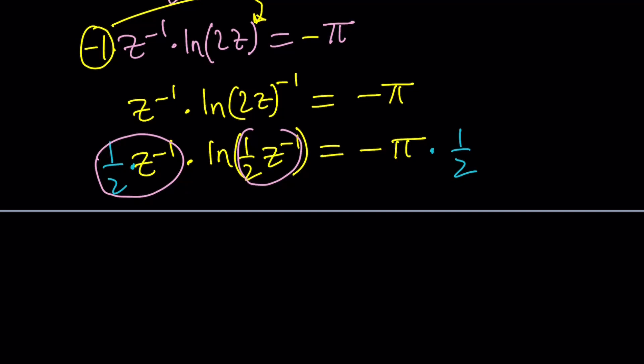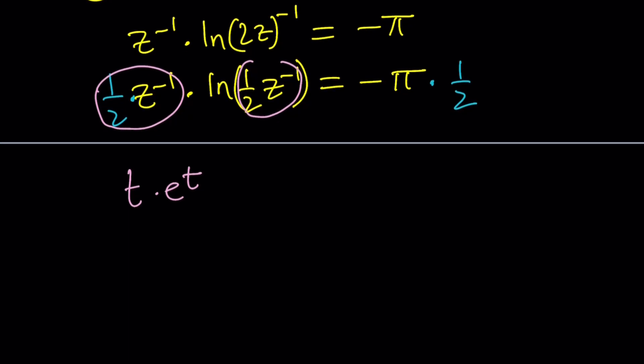Now we're going to make it even better because I want to get something like this. I want to get something like te^t. I don't have that. I have an ln. But I can get rid of that ln by using substitution or by using an identity. What is that identity?